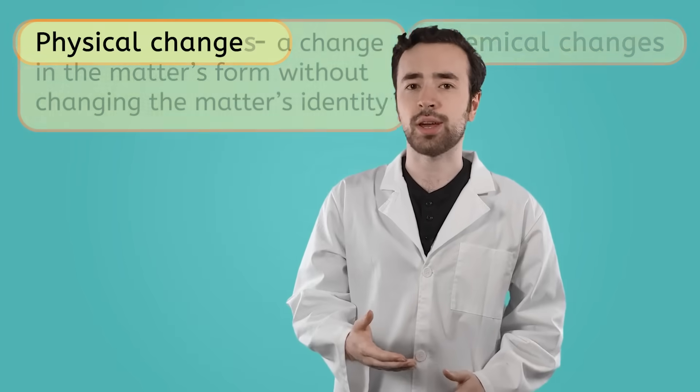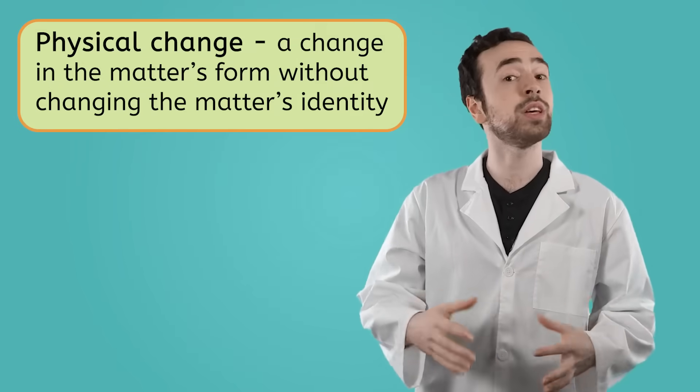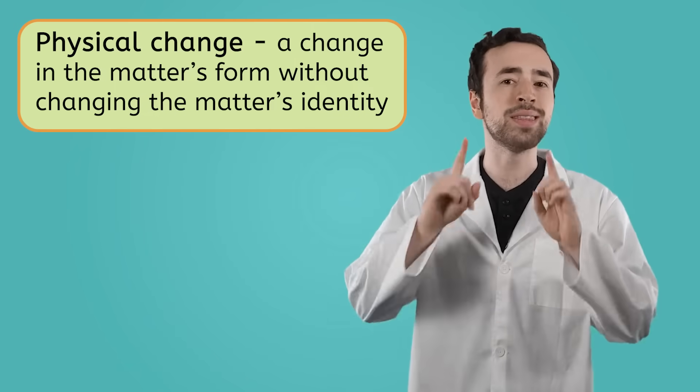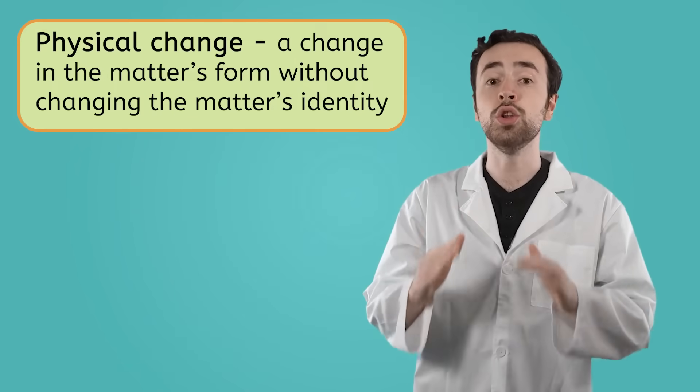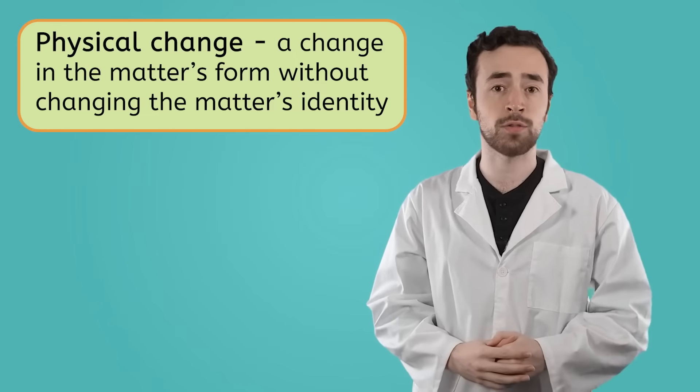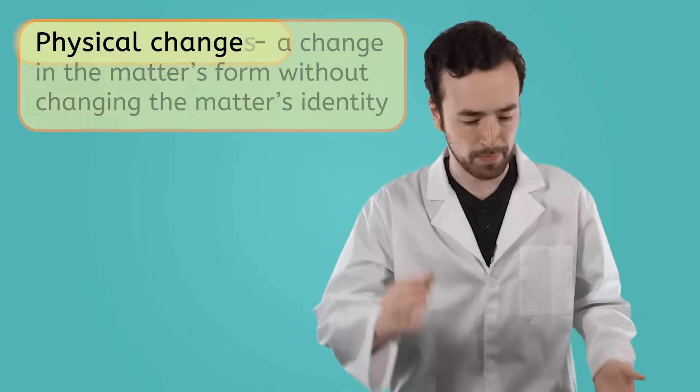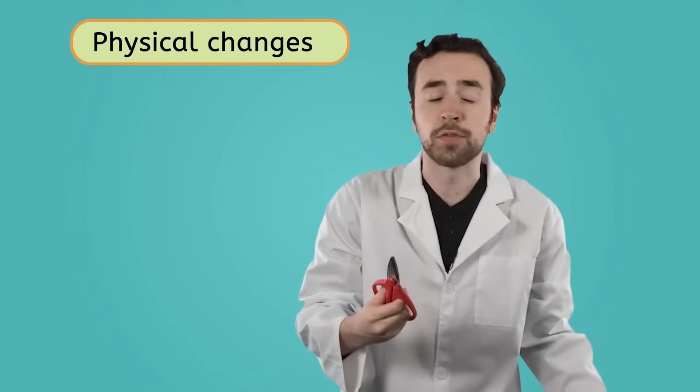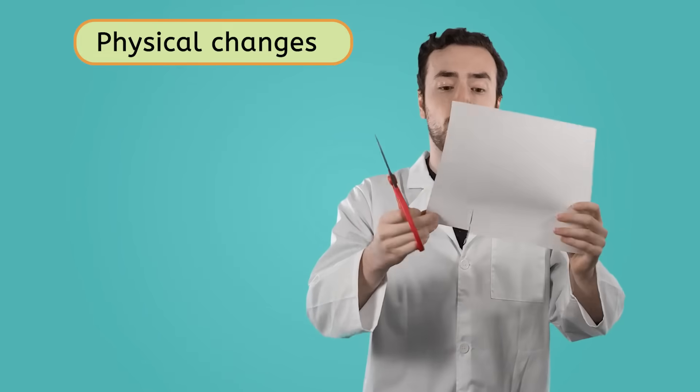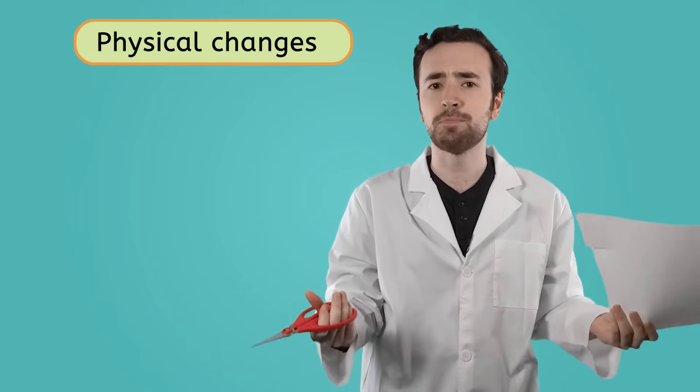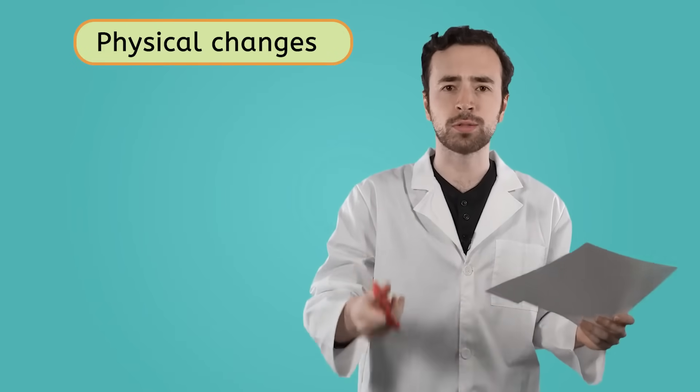A physical change is a change to matter in which its form changes, but not its identity. When a physical change happens, no new substances are formed. For example, I can carefully cut this piece of paper, and I've changed it. I've changed the form, but it's all still paper. Nothing new was made.